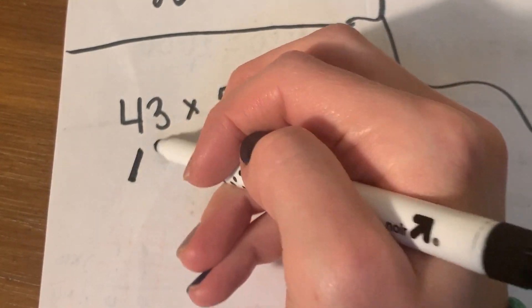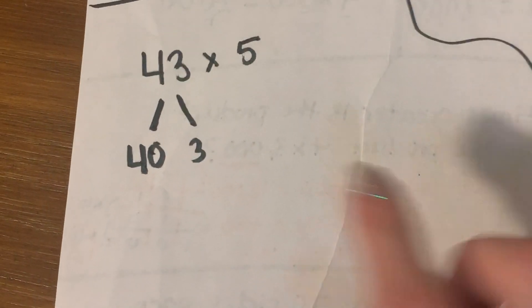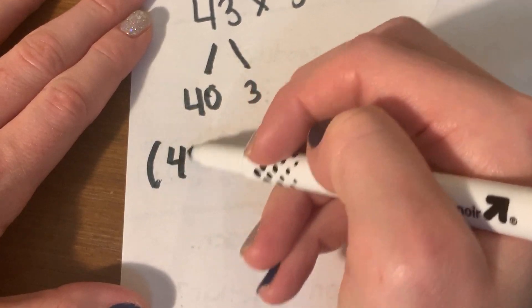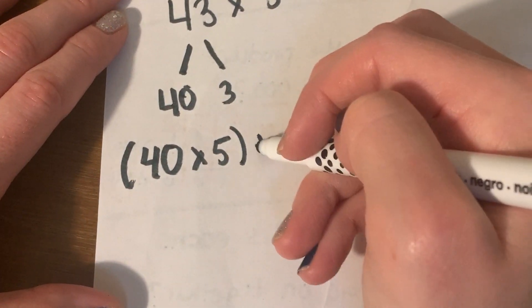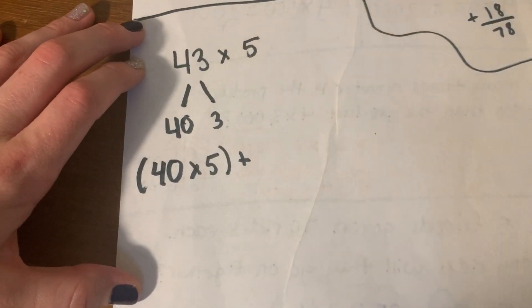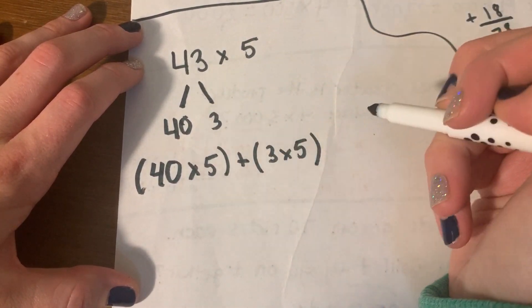All right, I'm splitting it into 40 and 3. It's a partial product. 40 times 5 plus 3 times 5.